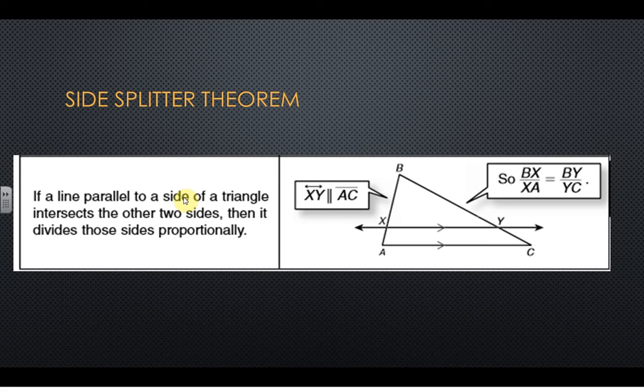Basically it says if a line is parallel to a side of a triangle, it intersects the other two sides and cuts them proportionally. So what that means is BX is going to go to XA as BY goes to YC.